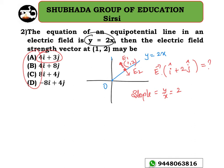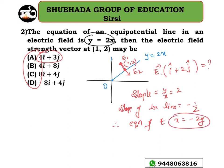Now let's find the value of the slope of the perpendicular line — that is the electric field direction. The slope of the perpendicular line should be equal to minus 1 by 2. Therefore, the equation of the electric field is x equal to minus 2y.